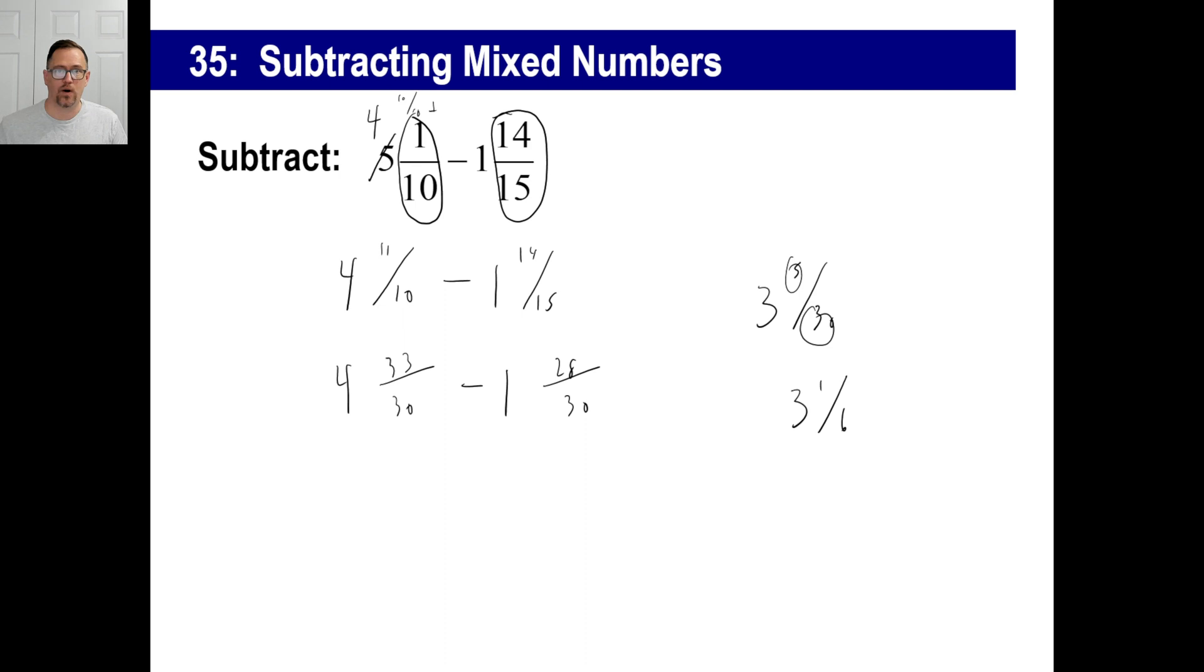You could also, if you wanted to, if you somehow blank out or something, you can look at this and go, okay, I'm just going to turn this into an improper fraction. So ten times five is fifty plus one is fifty-one tenths. And you could go, okay, one and fourteen fifteenths. Fifteen times one is fifteen plus fourteen is twenty-nine. So you could look at this and go, okay, well, ten and fifteen, the common denominator is still the same. It's going to be thirty.